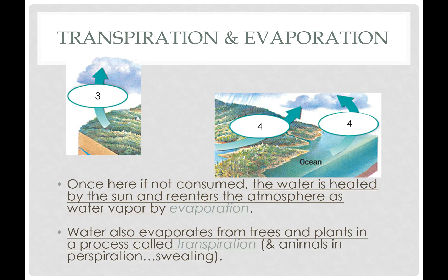Once that water has collected, if it's not consumed by organisms, it will be heated up by the sun and it will re-enter the atmosphere as evaporation. You know that if you leave a cup of water out long enough, eventually the water level goes down — because the water is turning from liquid to gas, and that's what evaporation is. Water can also evaporate from trees and plants through a process called transpiration, which is essentially when plants release water vapor. Animals of course release water vapor when we sweat or breathe.